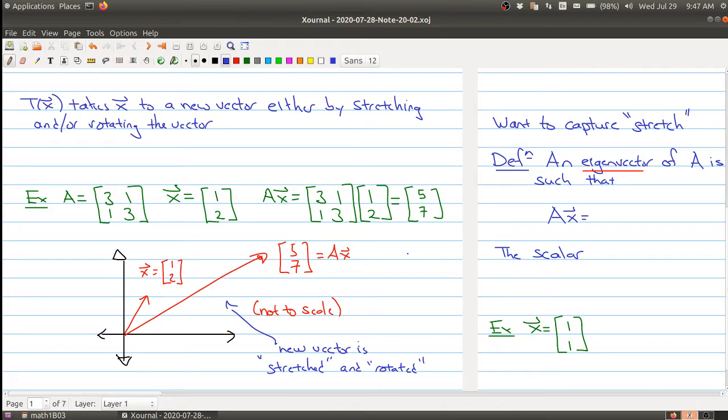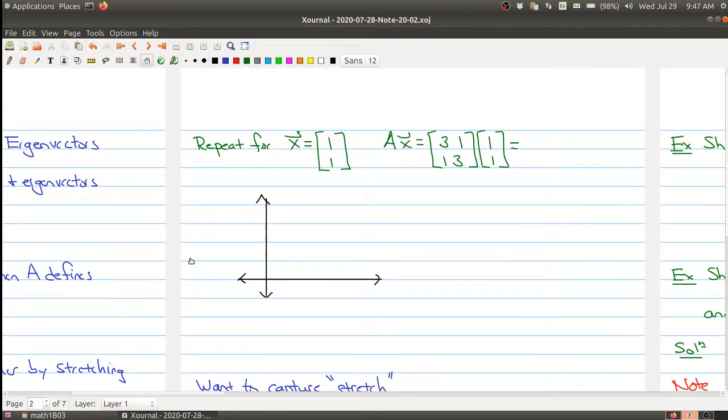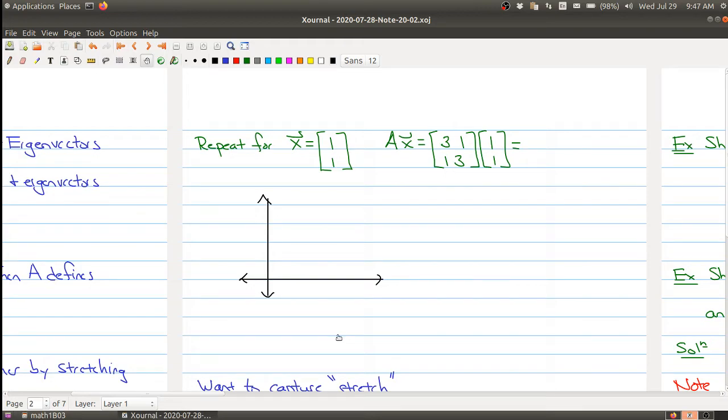Now, not every time we do this, we're going to get a vector that changes its direction. So let me be a bit more precise. Here's another vector x, and we're keeping our matrix A the same. So let me first plot where the first vector was. So this is the vector [1, 1] right here. And if I multiply this vector [1, 1] by our matrix, we get [4, 4].